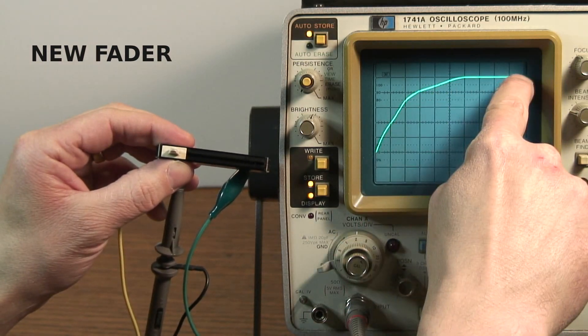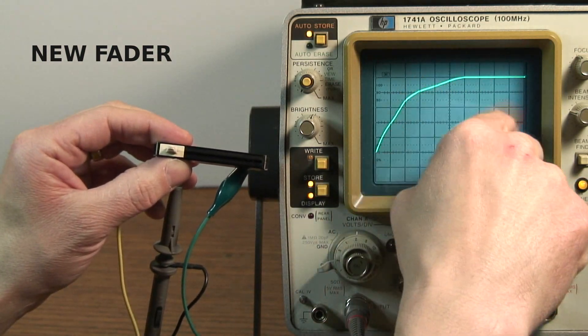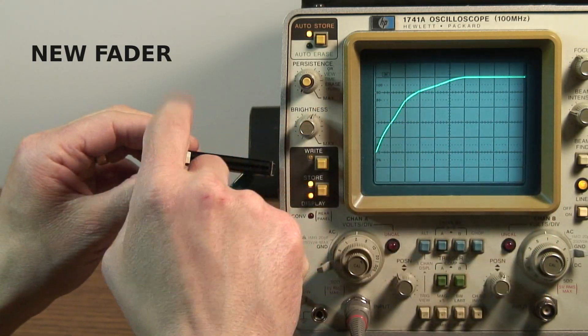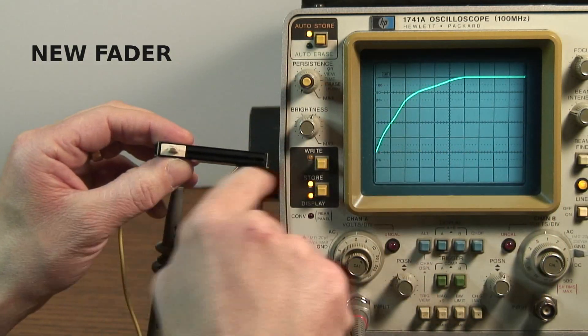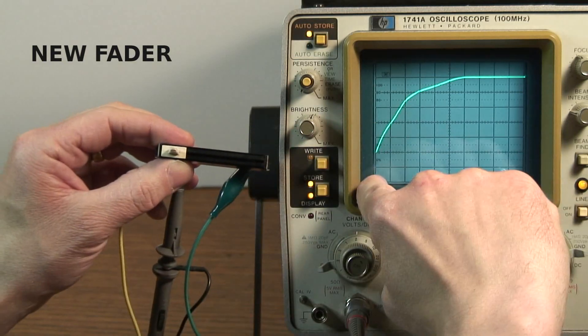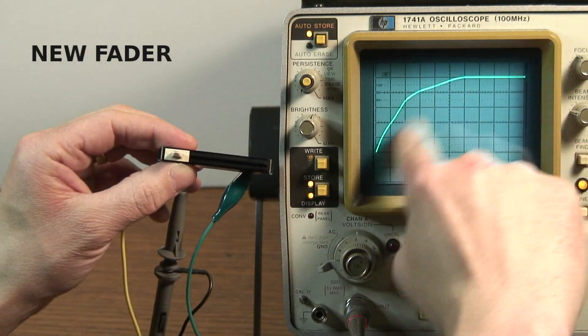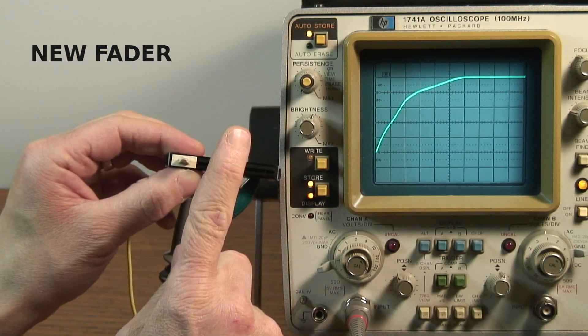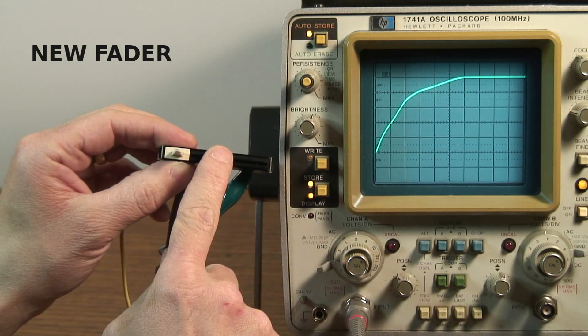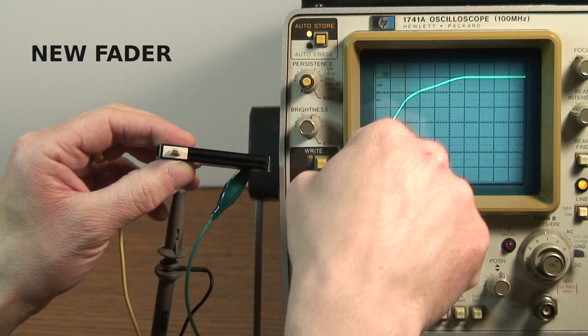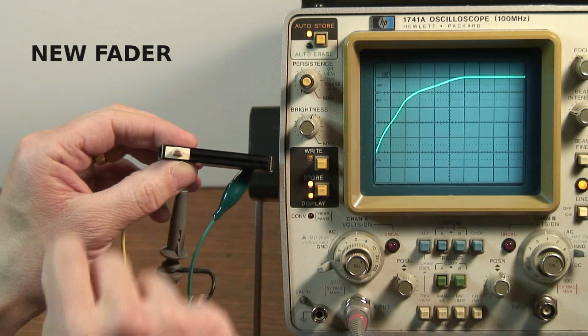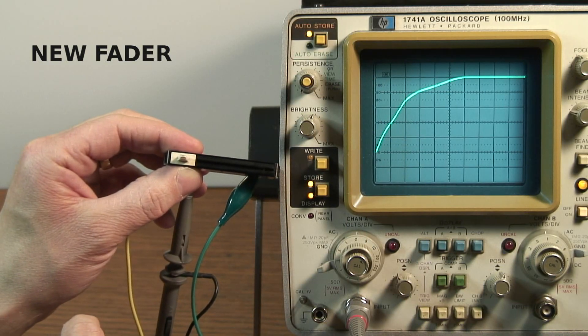That's almost exactly what I would expect to see from a brand new fader. What I'm looking for is a smooth shape with no spiky discontinuities. That indicates that the wiper is in contact with the resistive strip over the whole travel of the fader. I'm not particularly interested in the shape of the curve. Some of these faders are linear and some have an audio taper. What I'm really looking for are spikes and discontinuities. So this is great. This is what a brand new fader should look like.